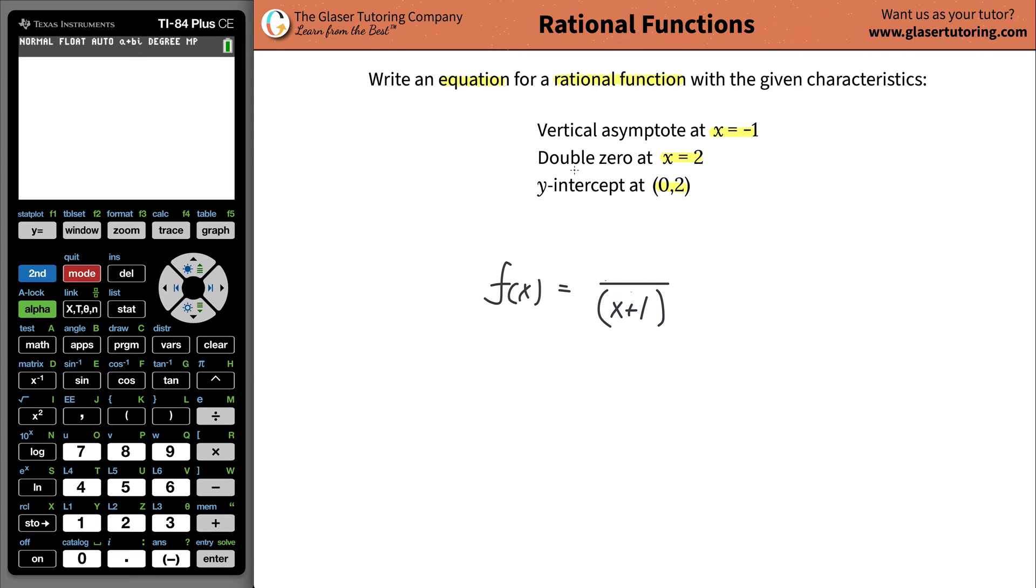The next thing I'm going to focus on is the double zero. Don't gamble—I don't gamble. It's a losing proposition. Take risks, but don't gamble. So double zero at x equals two. The zeros occur where the function crosses the x-axis. In other words, they're x-intercepts. They could have said you have an x-intercept at two, but it counts twice.